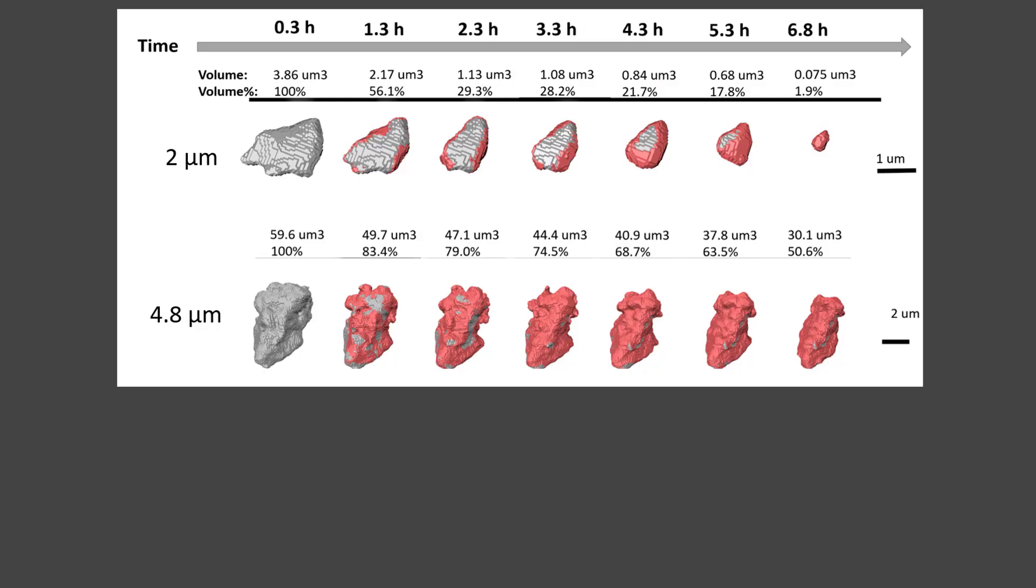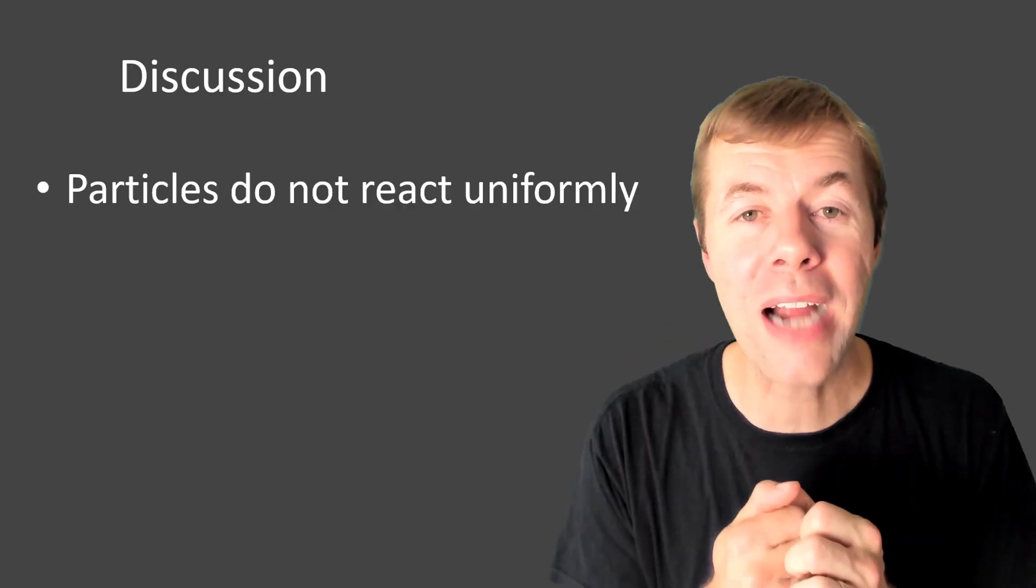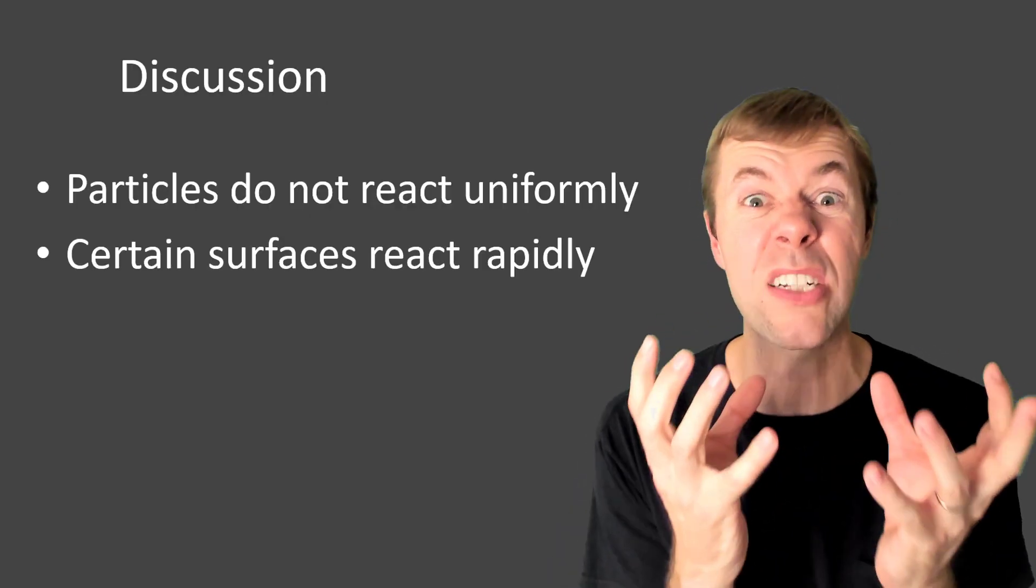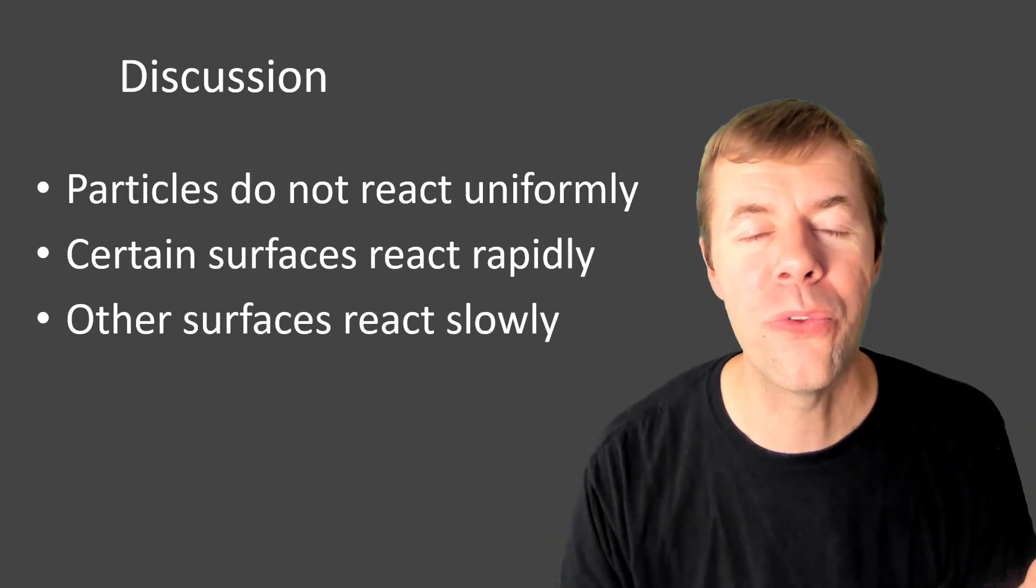So if we look at the medium-sized particles, they do the same type of thing. Some regions react a lot. Some regions don't react much at all. And the same thing for the large particles. This is crazy. These particles are not reacting uniformly. Certain surfaces react a lot and others just take their time and don't do much.